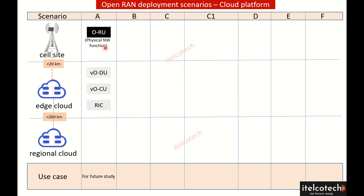Scenario A is where we have the RU at the cell site, but the DU, CU, and near real-time RIC are at the edge cloud. This ensures all different services — whether related to lower latency, since CU is at the cell edge, or broadband services — can be achieved.